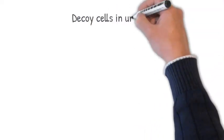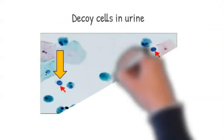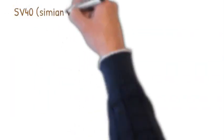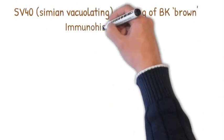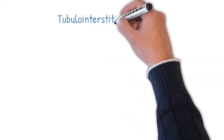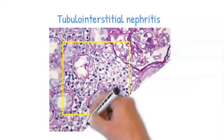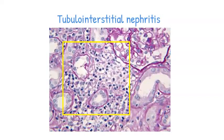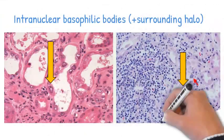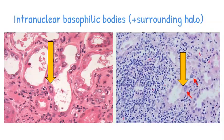Here are very important slides you need to be familiar with that may appear on your boards. These are the decoy cells — remember, this is the first thing to appear in BK infection, which are the virally infected epithelial cells. Here, by immunohistochemistry, the SV40 stain shows intranuclear bodies appearing brown. This is the typical tubular interstitial inflammation with lots of inflammatory cells, and here are the intranuclear basophilic bodies with the surrounding halo on the biopsy.